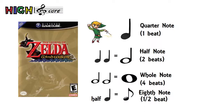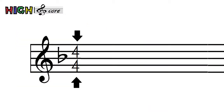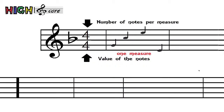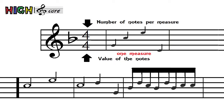Time signatures work like this: there are two numbers. The first number is the number of notes per measure — think of measures as a little chunk of the song. The second number is the value of those notes. For instance, in the most common time signature of 4/4, there are four quarter notes: 1, 2, 3, 4. Keep in mind, this is all math. So a 4/4 time measure could have four quarter notes, two half notes, a half note and two quarter notes, eight eighth notes, or any combination, as long as it all equals up to the equivalent of four quarter notes.